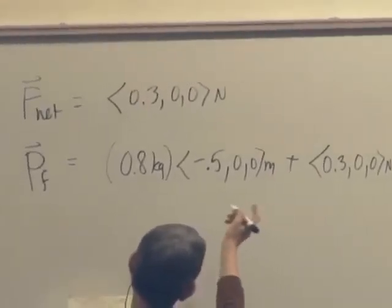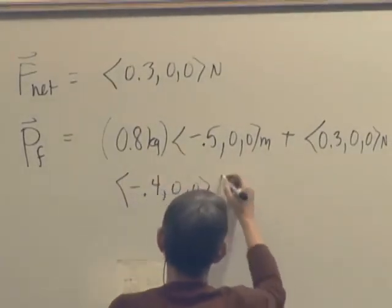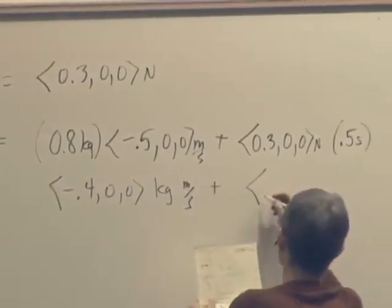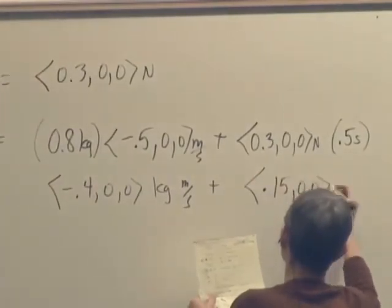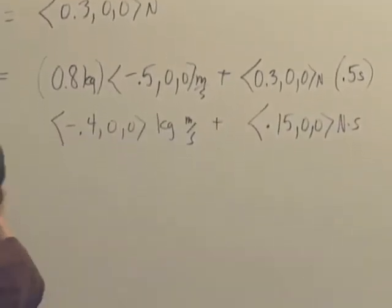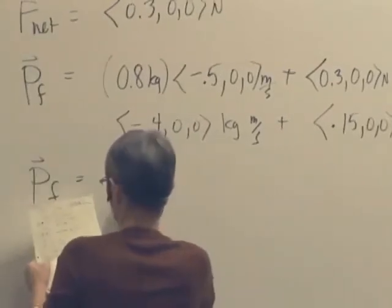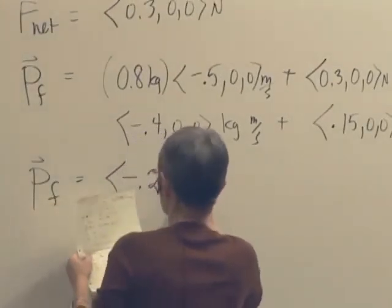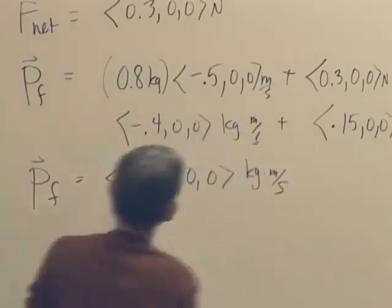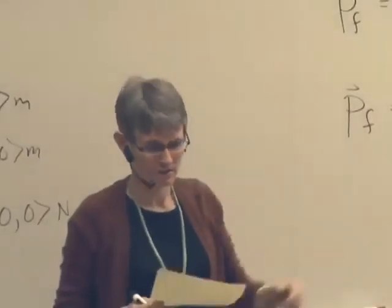And so we do some arithmetic. And here we get negative 0.400 kilogram meters per second. And here we get 0.1500 newton seconds. So we've already established that those two sets of units are actually the same. So we get a momentum after 0.5 seconds of negative 0.2500 kilogram meters per second, which makes sense. It's clearly slowed down. And that makes sense because the force was in the direction opposite to its motion.